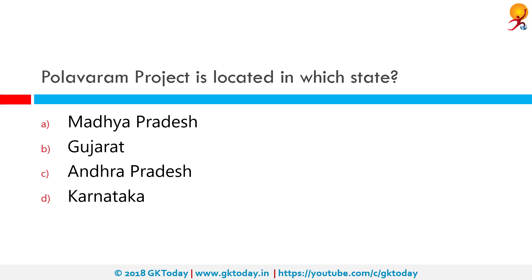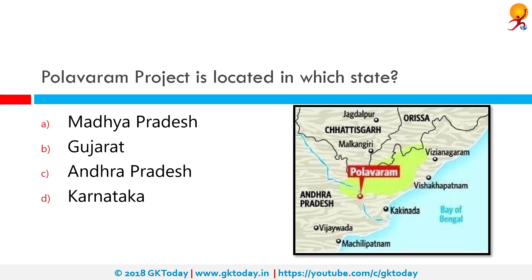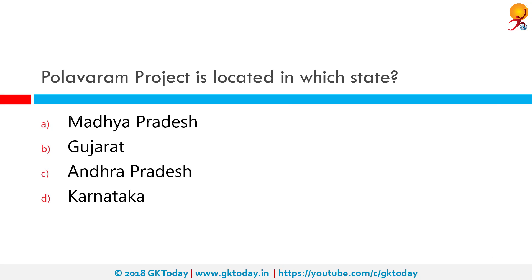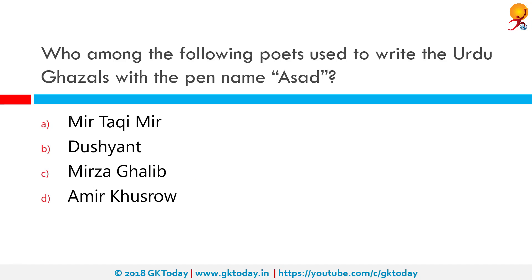The Polavaram project is located in which state? The Polavaram project is a multi-purpose irrigation project which has been accorded national project status by the union government. As you can see on the map, it is located in Andhra Pradesh. Hence, the correct answer is option C: Andhra Pradesh.